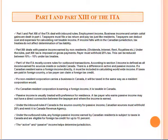Part 1 of the ITA mostly covers rules for outbound transactions. According to Section 3, income is defined as all income earned from sources inside or outside Canada. There is a difference between active and passive income. If a Canadian resident earns foreign income directly, it must be included in calculating worldwide income. If taxes are paid in a foreign country, a taxpayer can claim a foreign tax credit.